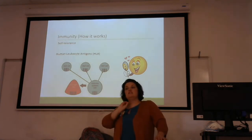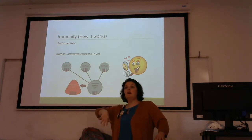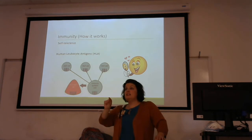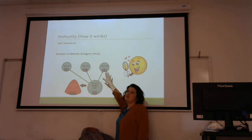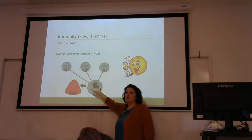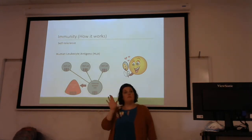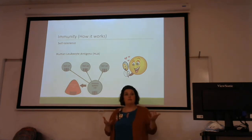Your HLA type is on all your cells throughout your body. Your immune system is constantly surveilling all cells, looking for that barcode. As long as it encounters that HLA type, nothing happens — everything's fine. But the minute it comes in contact with something that does not have the same HLA barcode, your immune system says, 'This is not a self-cell. I've got to get rid of it,' and it starts mounting an attack.